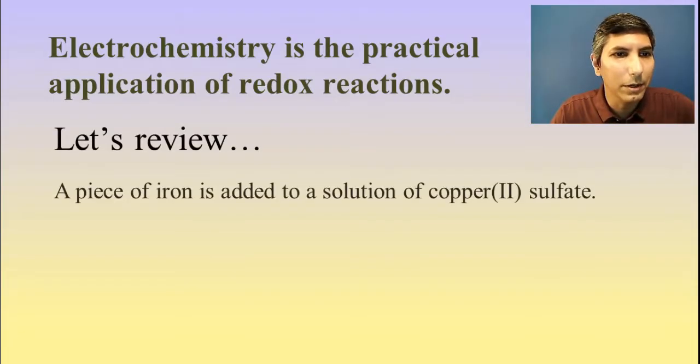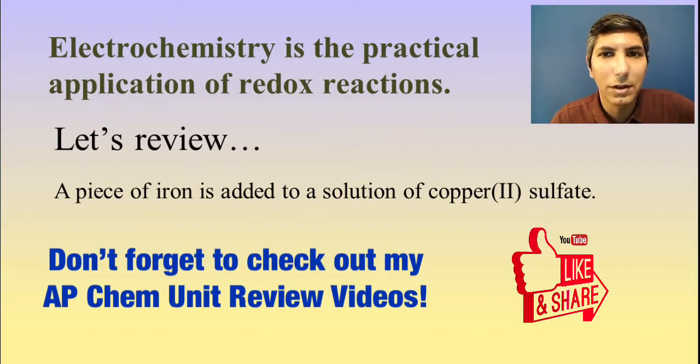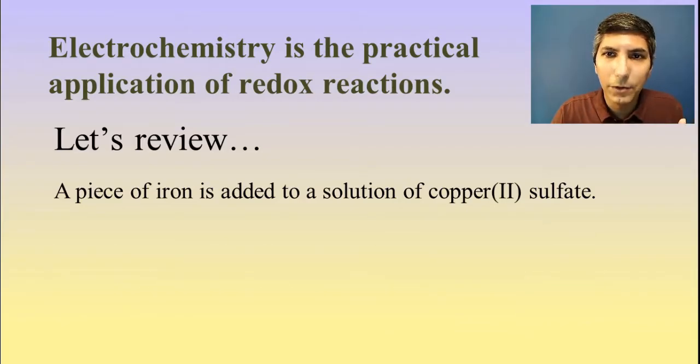Let's take a look at an example here. Let's say we have a piece of iron that is added to a solution of copper sulfate. Well, first thing we have to do is recognize that the sulfate ion is not doing anything. That's a spectator ion. Because in most of these redox reactions, a metal is reacting with metal ions. So it's the iron and the copper ions that are the reactants.